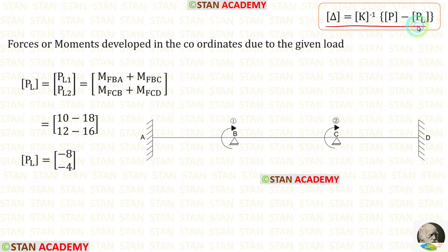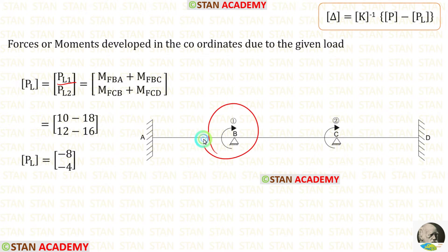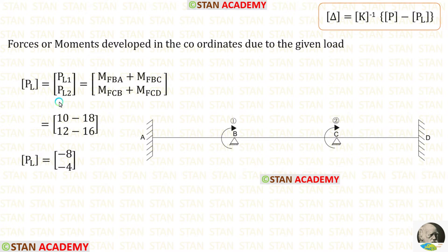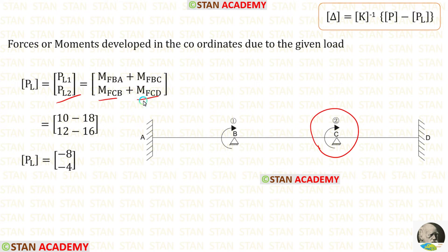In this formula, first let us find the PL matrix. For PL1, our first coordinate is at point B, where we have two fixed end moments: M of BA and M of BC. Adding both, we get minus 8. For PL2, our second coordinate is at point C, where we have two fixed end moments: M of CB and M of CD. Adding both, we get minus 4.